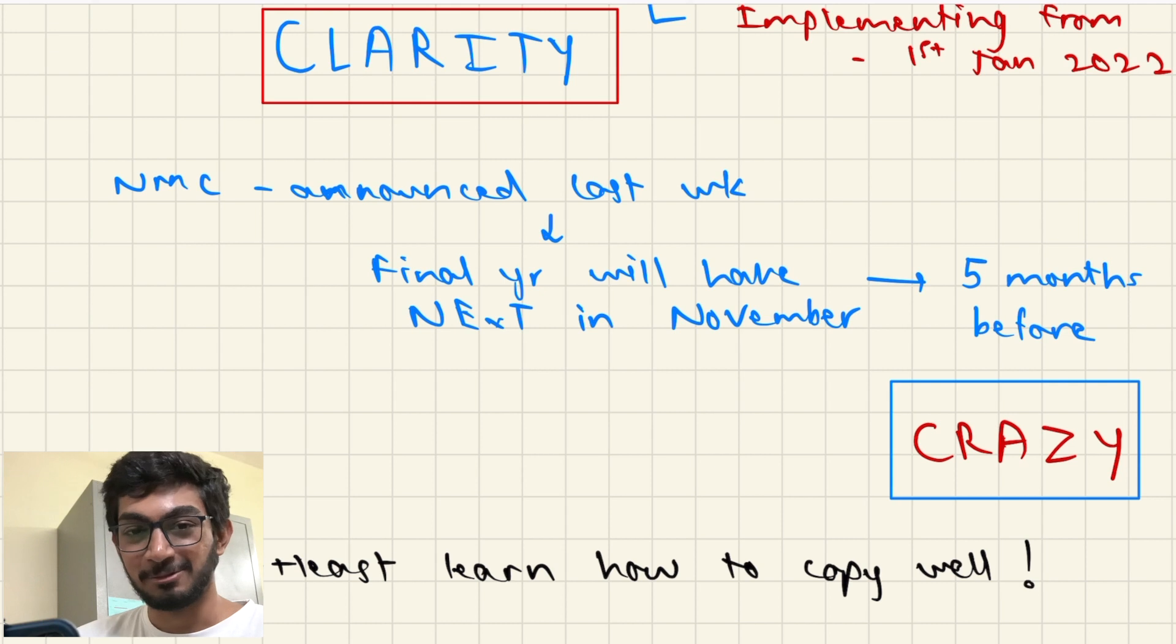What NMC did was they announced it last week that the final year students will have NEXT in November and that is literally like five months away from now. It's beyond crazy - you can't just do such a major change in such a less amount of time. I know they had given a notification like two years back saying that NEXT is going to come, but they didn't really specify exactly from which batch NEXT is going to be. And even now there's not a lot of clarity for the current interns who will repeat the exam, and for the post-interns they've just written that it will be decided by the NMC until whenever they want to keep continuing NEET PG.